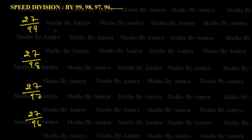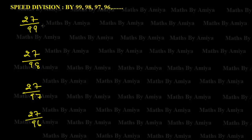Hello friends, welcome to the world of Maths by Mea. Let's discuss speed division by 99, 98, 97, 96, and so on — divisors near 100. Believe me, this is not a trick but an observation and a concept of the division method. What we are doing is nothing but a fast calculation, or the last step of the division.